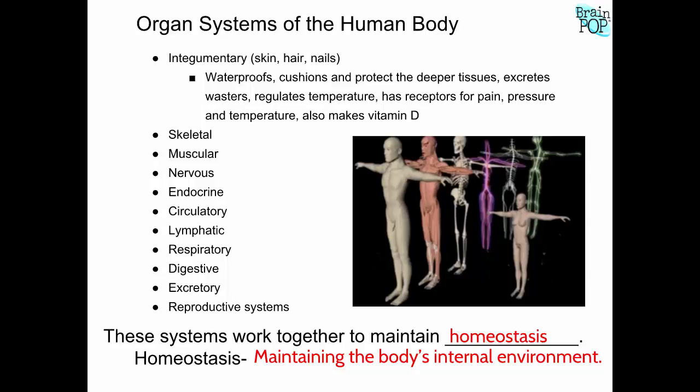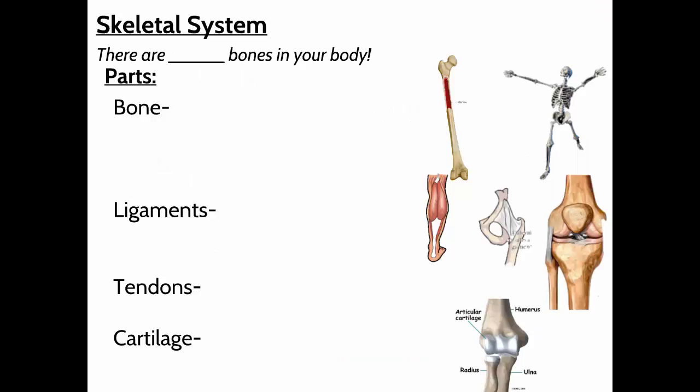The skeletal system helps protect our organs; it also gives our body support and structure, and allows us to move. The adult human body has 206 bones — I have to say 'adult' because babies have more bones.